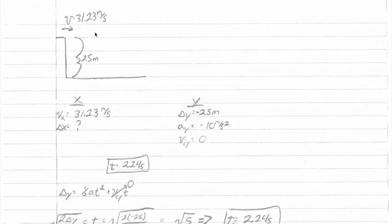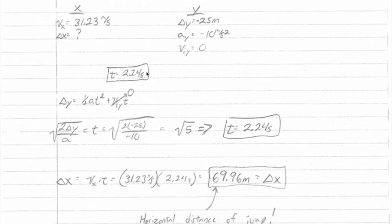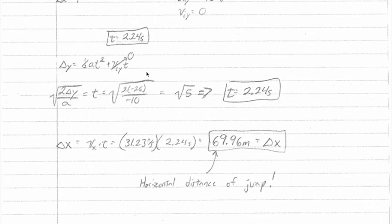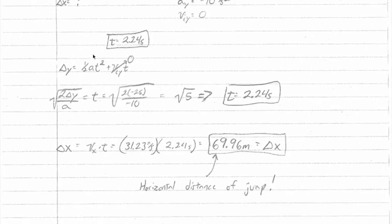So we now know that once the skier leaves this jump, he will be airborne for 2.24 seconds. And as we usually do in this class, we're going to ignore air resistance. Since there's no air resistance, we know that there's no acceleration in the x-direction. So his initial and final x velocities will be the same, 31.23 meters per second. It's our job to find out now, if he's in the air for 2.24 seconds, how far he will travel in the x-direction.